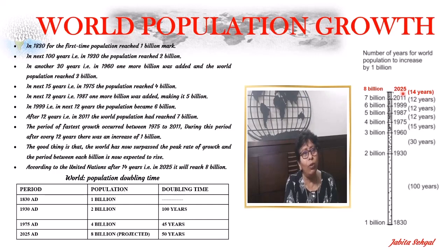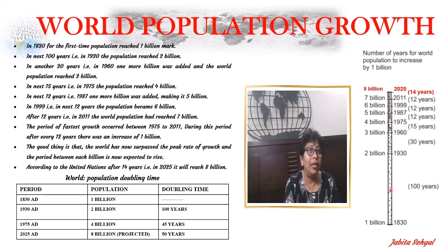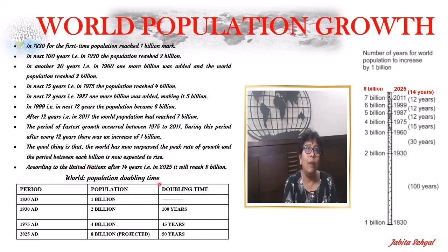We already know that at present, in the year 2020, population has reached 7.8 billion. So, as per the estimates, in 2025 it will hit 8 billion. Now, looking at the visualization again, let's talk about the doubling time of the world population. Doubling time of the population is the period of time required for a country to double its population.